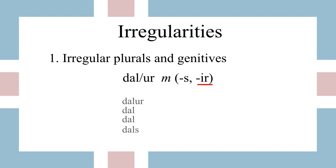So instead of having 'dalar' as you would expect in nominative, we have 'dalir' instead. This is a very common ending for these words. This is also going to affect our accusative form — it becomes 'dali' instead of 'dala' — and then the other two cases are as you'd expect. So watch out for that -ir ending in the plural.